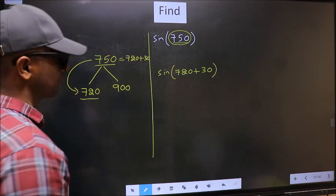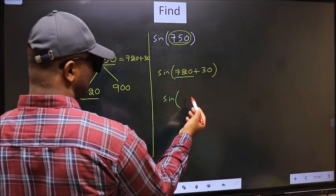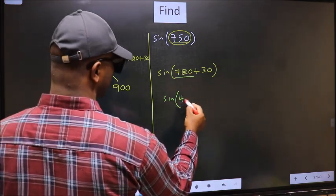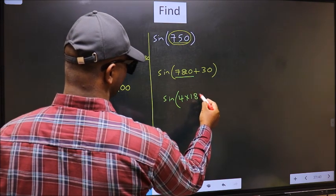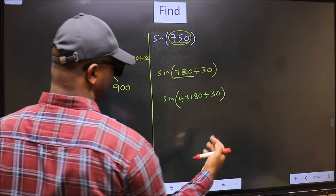Next. Sign. Now in place of 720, we should write 4 into 180 plus 30. Next.